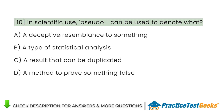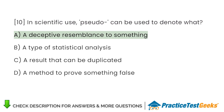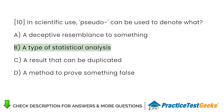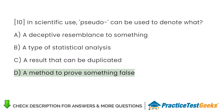In scientific use, pseudo- can be used to denote what? A. A deceptive resemblance to something B. A type of statistical analysis C. A result that can be duplicated D. A method to prove something false